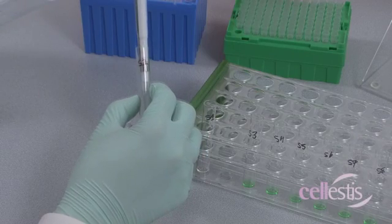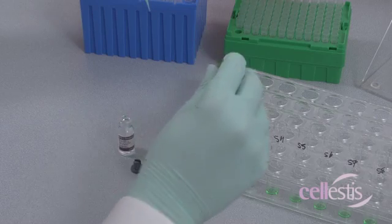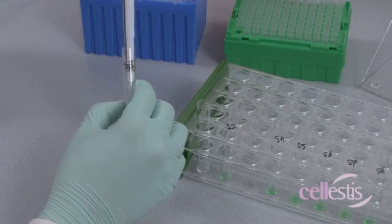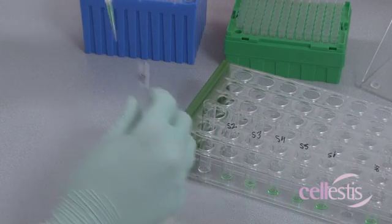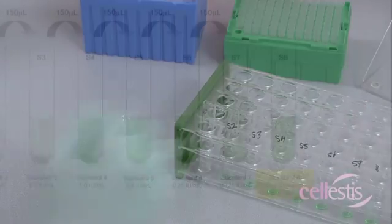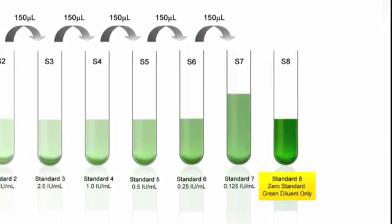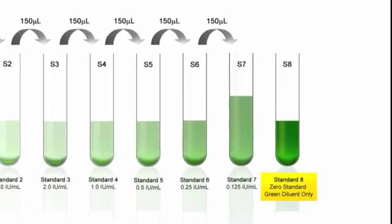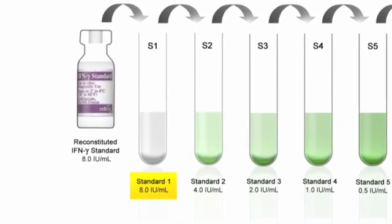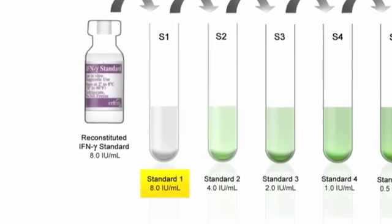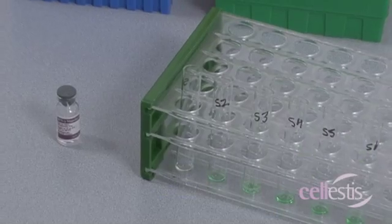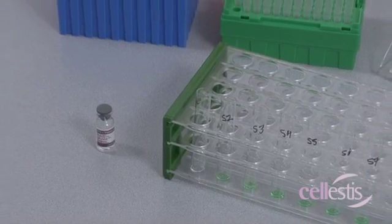Add 150 microlitres of the kit standard in S1 to S2 and mix thoroughly. Then transfer 150 microlitres from S2 to S3. Mix thoroughly and so on until you reach tube S7. Remember not to transfer anything into tube S8. It contains only green diluent as it serves as the zero standard. The undiluted kit standard in S1 serves as the highest concentration at eight international units per milliliter. Set the standards aside for use in the ELISA reaction steps.